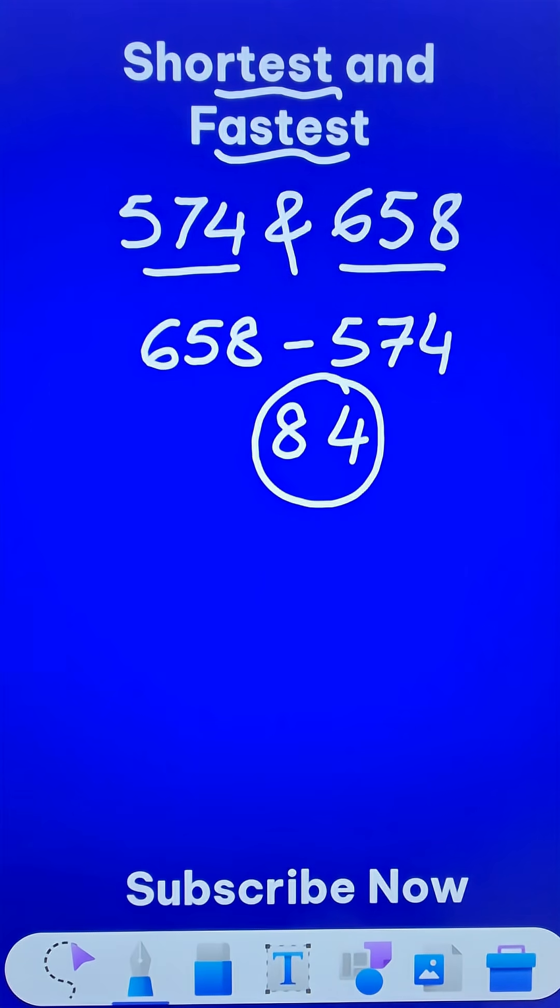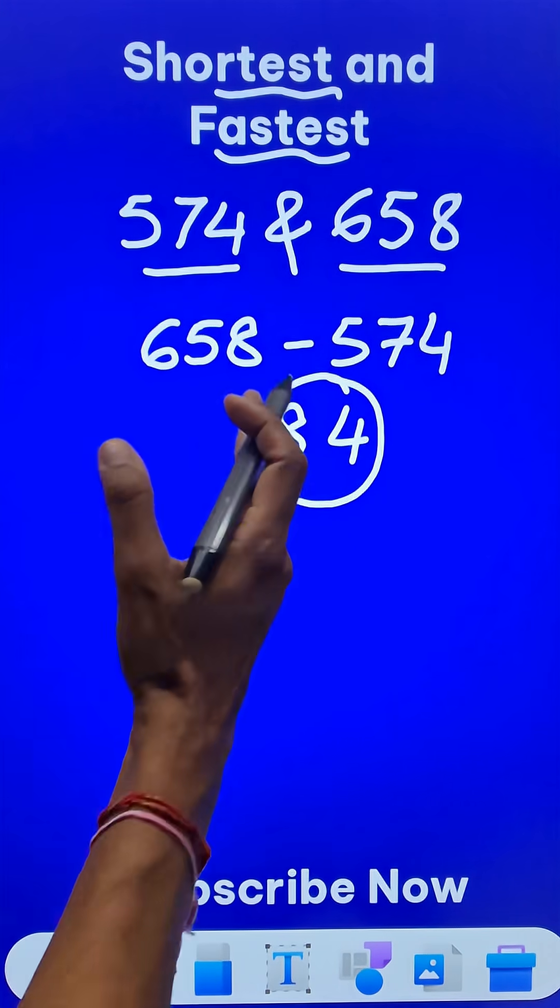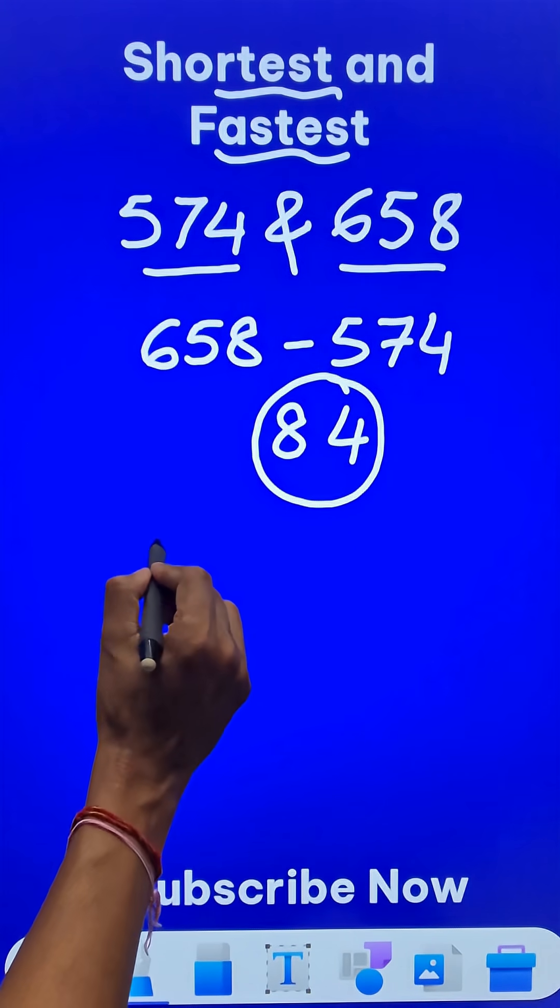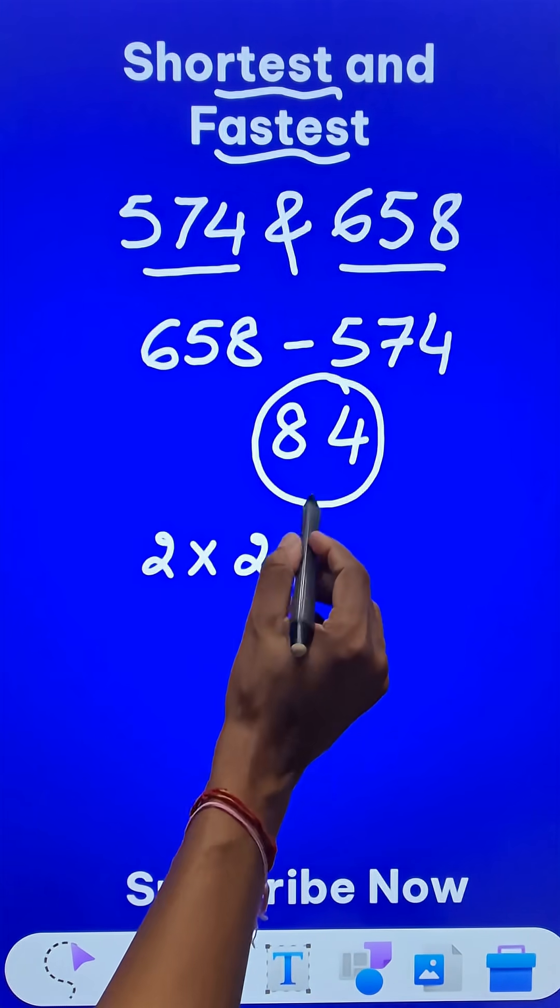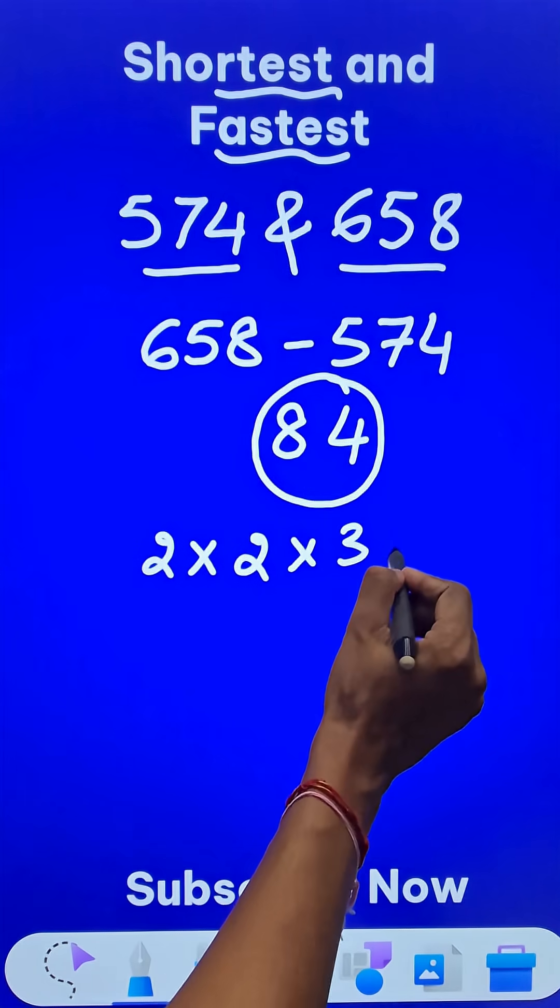So we have this 84 and now I need to break down this 84 into its factors. So prime factors of 84, 2 times 42. So that's 2 times 21 and so 3 times 7.